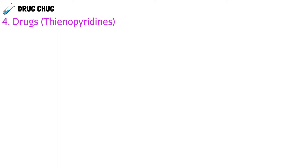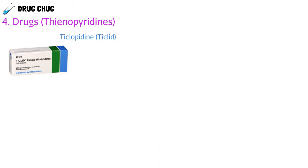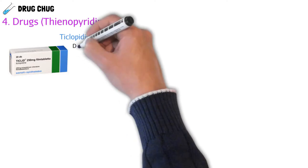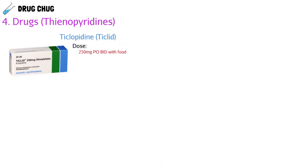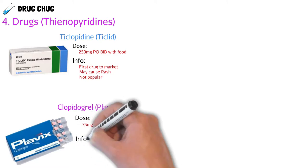Let's get into the thienopyridines — irreversible inhibitors with a sulfur group that can cause allergic rashes. The first drug on the market was ticlopidine (Ticlid), typically no longer available in the United States, with a dose of 250 mg by mouth twice a day with food. The drug that took over was clopidogrel (Plavix), dosed at 75 mg by mouth daily, with a possible loading dose of 300 mg.